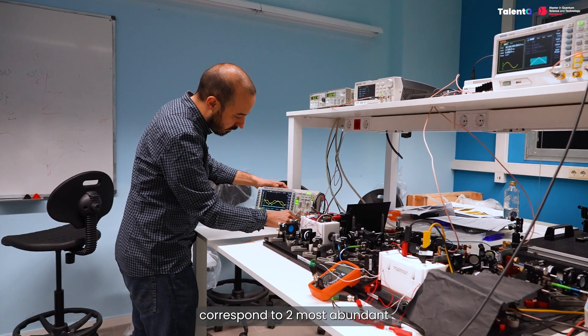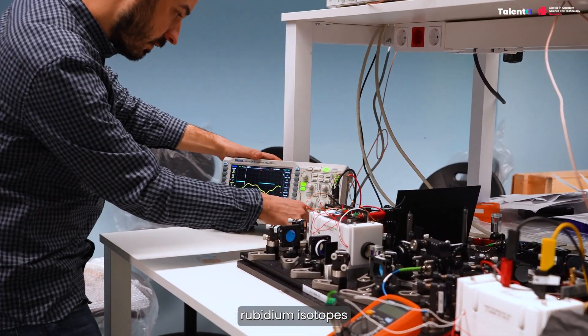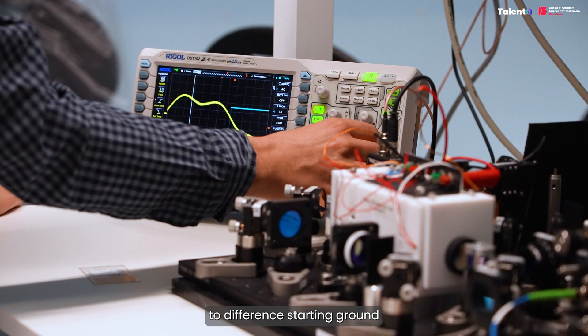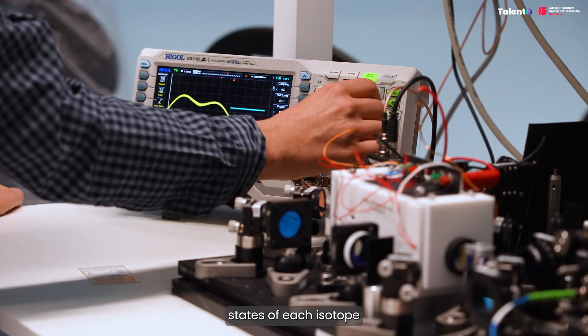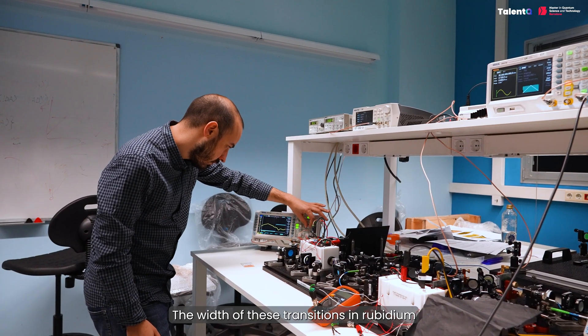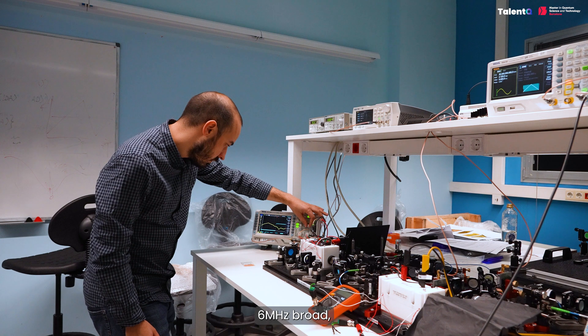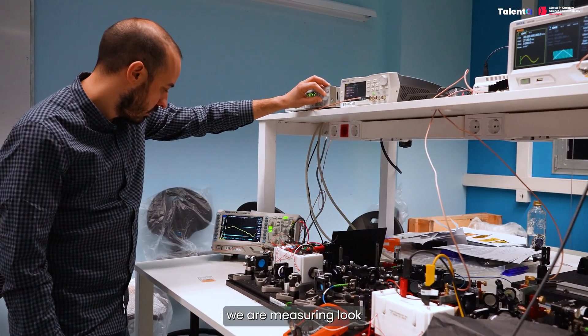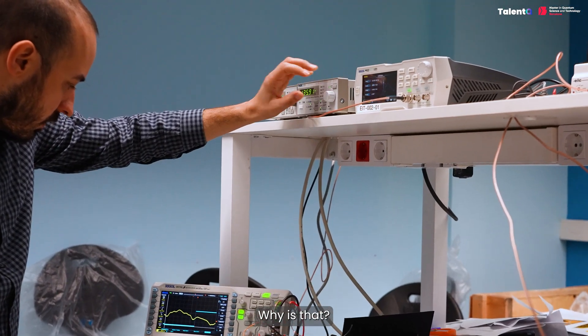These transitions correspond to two most abundant Rubidium isotopes, that is Rubidium 87 and Rubidium 85. They also correspond to different starting ground states of each isotope. The width of these transitions in Rubidium is known to be around 6 megahertz broad. However, the resonances that we are measuring look much broader than that. Why is that?